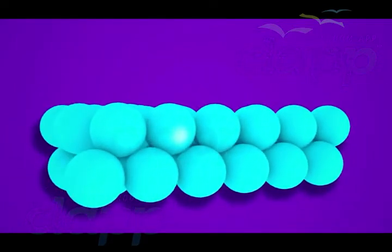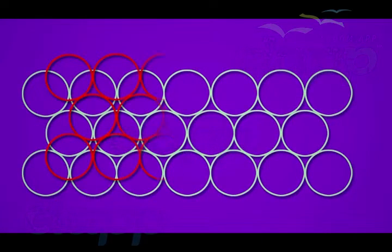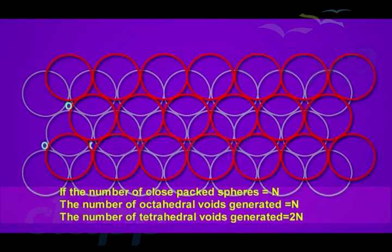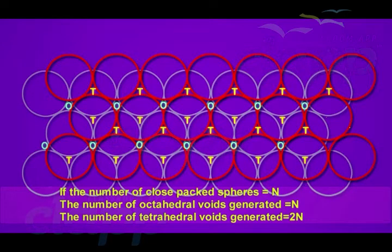The number of these two types of voids depends upon the number of close-packed spheres. If the number of close-packed spheres is equal to n, then the number of octahedral voids generated is equal to n, and the number of tetrahedral voids generated is equal to 2n.